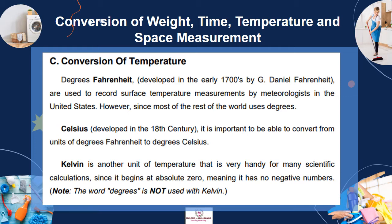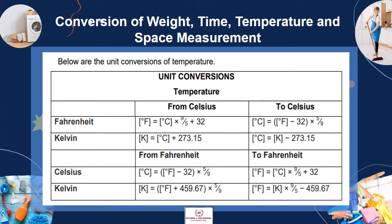Letter C: Conversion of Temperature. Degrees Fahrenheit, developed by Daniel Fahrenheit in the early 1700s, are used to record surface temperature measurements by meteorologists in the United States. Since most of the rest of the world uses degrees Celsius, developed in the 18th century, it is important to convert from Fahrenheit to Celsius. Kelvin is another unit of temperature useful for scientific calculations, since it begins at absolute zero and has no negative numbers. Note: the word 'degrees' is not used with Kelvin.